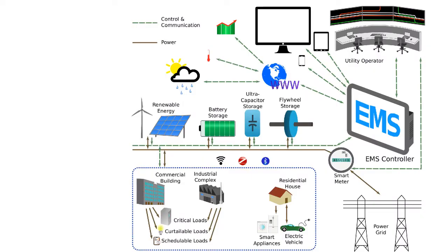The energy management system and different components of the microgrid need different communication protocols such as Zigbee, Wi-Fi, Bluetooth, and Z-Wave. The fifth generation of Wi-Fi is very popular. Z-Wave is fairly popular and has a low data rate but greater range compared to Wi-Fi. Z-Wave is a proprietary protocol. When charging or discharging an electric vehicle back to the grid, the home area network works on Wi-Fi, and the smart metering network also communicates with the controller via Wi-Fi.